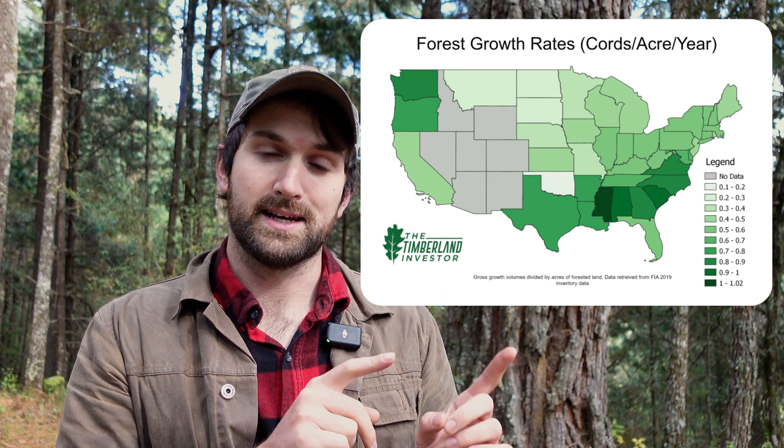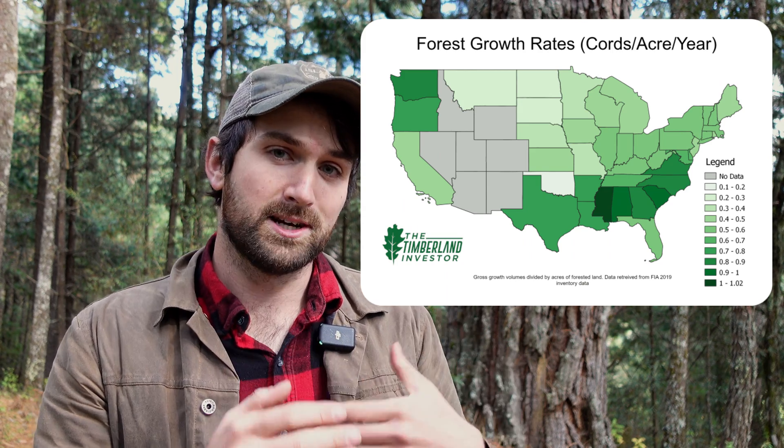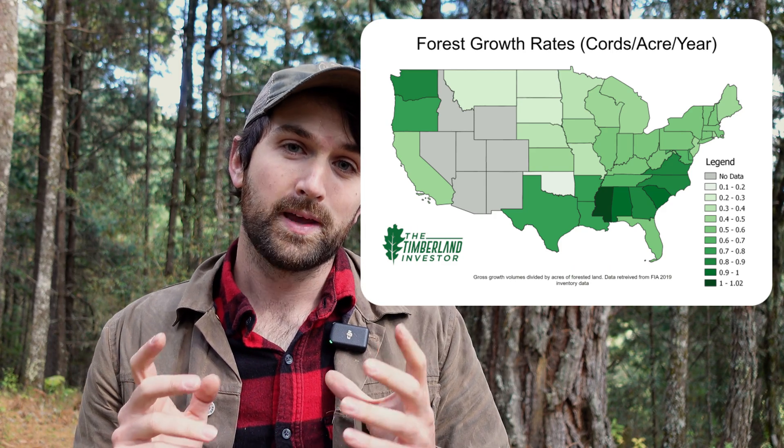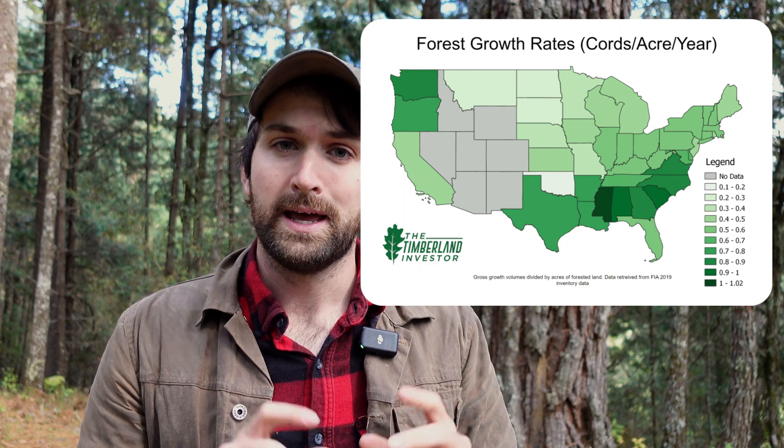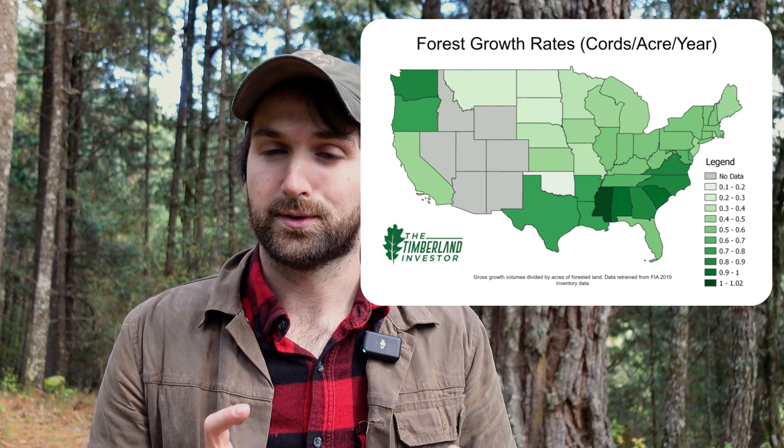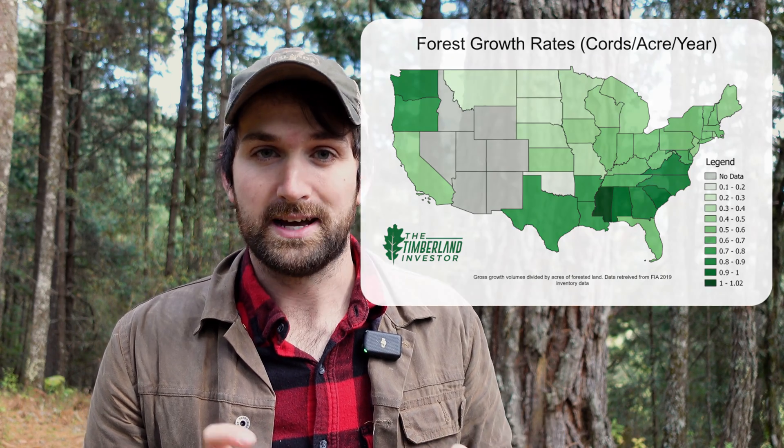And finally, climate. I have a map here of gross forest growth rates in the United States, and you can see that down in the southeast they tend to have much faster growth rates than in the northeast. In Maine we only have a two to three month growing season for trees, and in the southeast that might be as much as five months. Importantly, these four factors are all interdependent — in the southeast, they also grow faster species, probably because of the climate. The only factor that's relatively independent of the others is age.